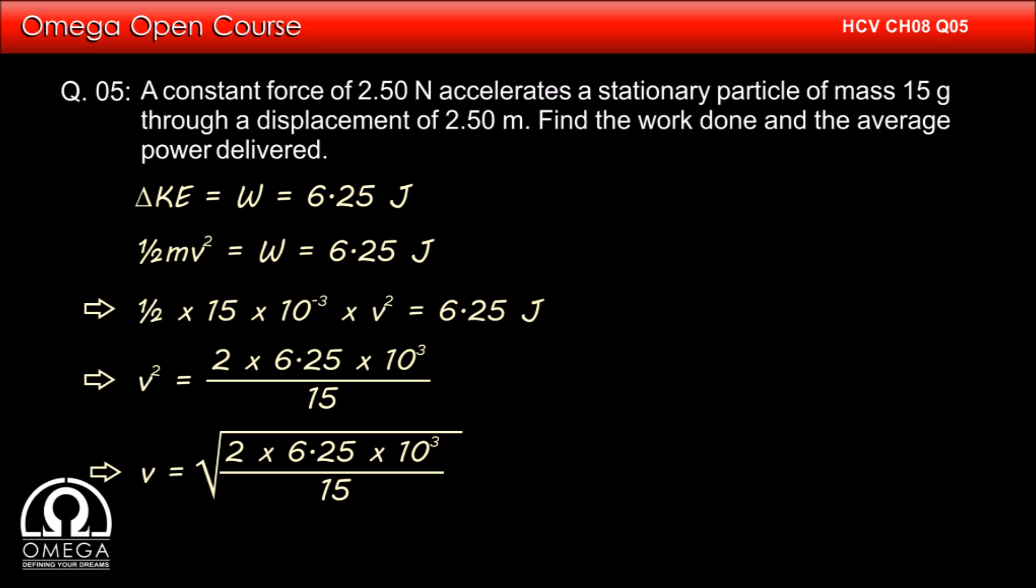Therefore, v is equal to root under 2 × 6.25 × 10⁻³ divided by 15. Simplifying, we get v is equal to 28.9 meter per second.